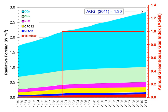The contribution of each gas to the greenhouse effect is determined by the characteristics of that gas, its abundance, and any indirect effects it may cause. For example, the direct radiative effect of a mass of methane is about 84 times stronger than the same mass of carbon dioxide over a 20-year time frame, but it is present in much smaller concentrations so that its total direct radiative effect is smaller, in part due to its shorter atmospheric lifetime. On the other hand, in addition to its direct radiative impact, methane has a large indirect radiative effect because it contributes to ozone formation.